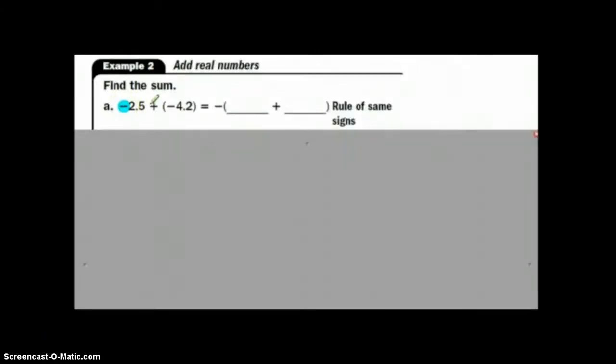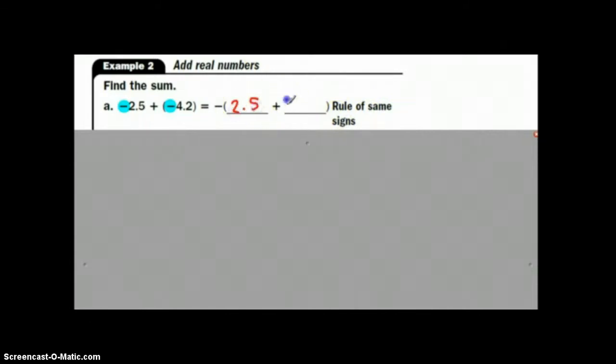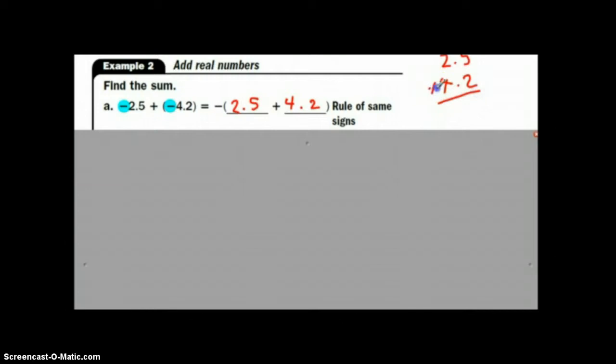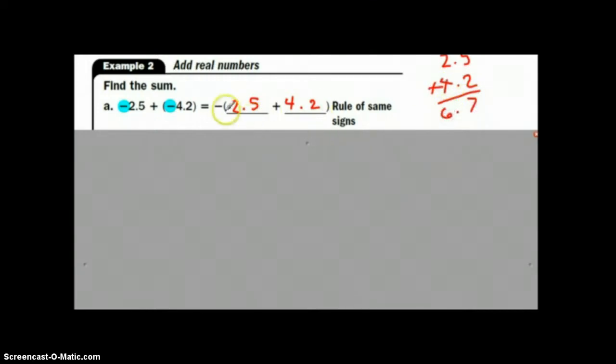We have a negative number combined with a negative number, that's the rule of the same signs. So to do this problem, we will add 2.5 and 4.2. Now if that's not something you can do in your head, you might remember that to add decimals, decimals are real numbers because they can be written as fractions. So our answer ends up being, see the negative out here, our answer ends up being negative 6.7.